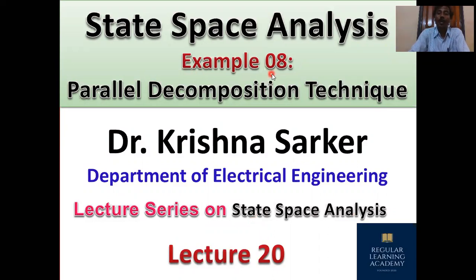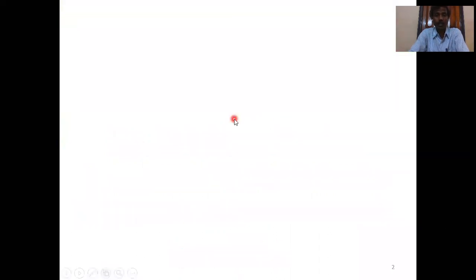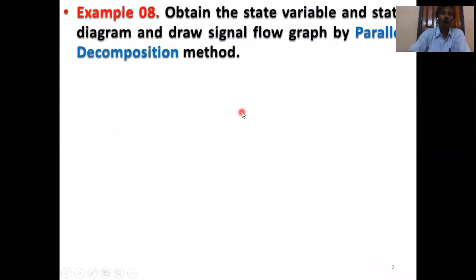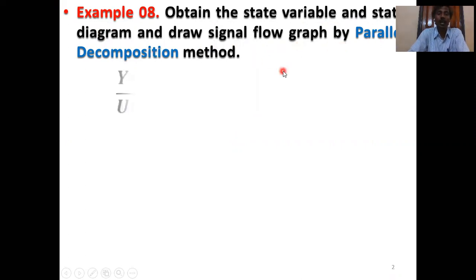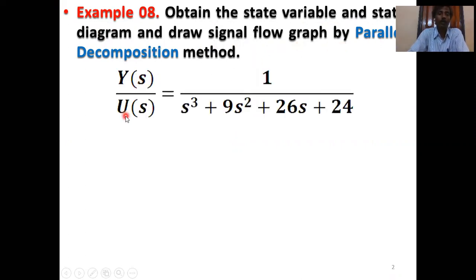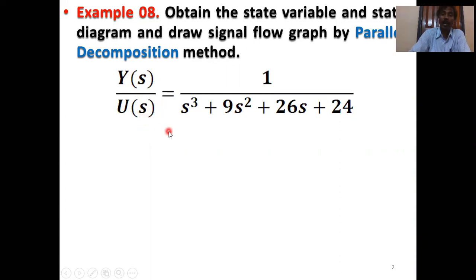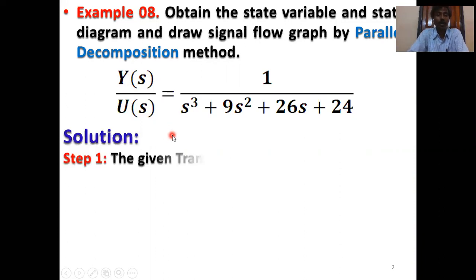Example 8 by parallel decomposition technique. Obtain the state variable, state diagram, and draw signal flow graph by parallel decomposition method. The transfer function is: Y(s)/U(s) = 1 / (s³ + 9s² + 26s + 24). Y(s) is the system output and U(s) is the system input. The input may be step, ramp, parabolic, impulse — any type of input can be applied.